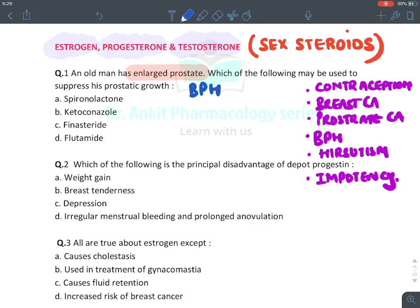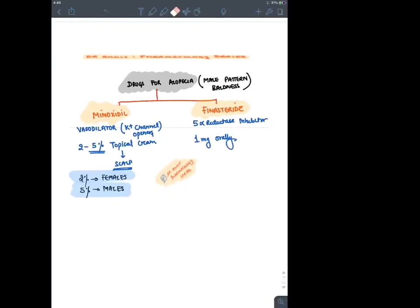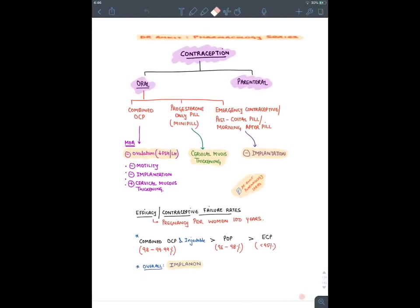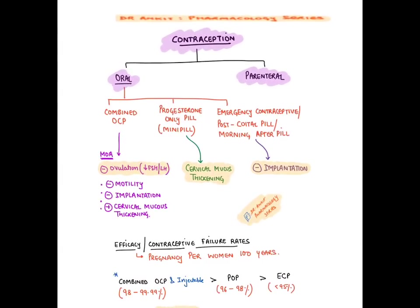Next question: what is the principal disadvantage of depot progestin? Depot progestin is a type of contraceptive. Contraceptives are divided into oral or parenteral forms. Oral contraceptives include combined OCP (containing estrogen and progesterone), progesterone-only pills (mini pill), and emergency contraceptive pills (post-coital/morning-after pills). The main mechanism of combined OCP is inhibiting ovulation; progesterone-only pills cause cervical mucus thickening; emergency pills inhibit implantation.